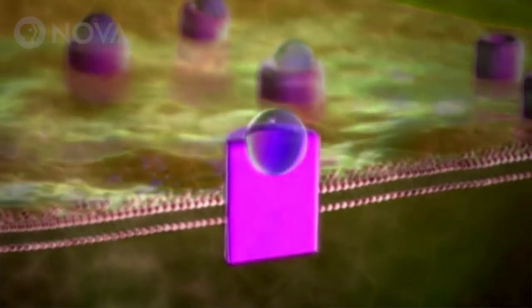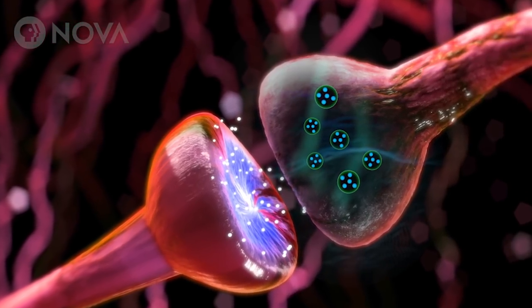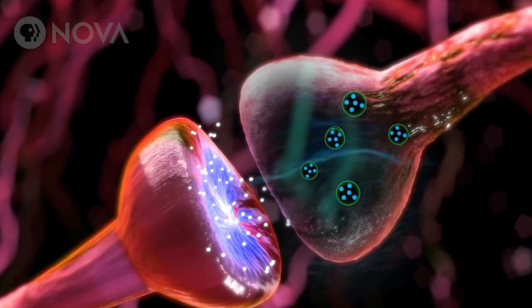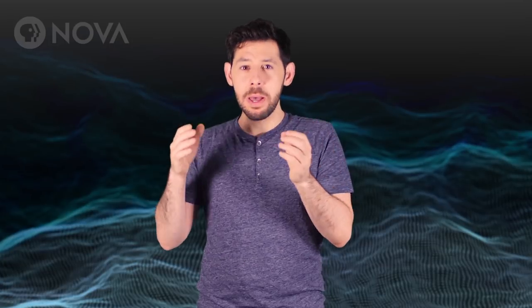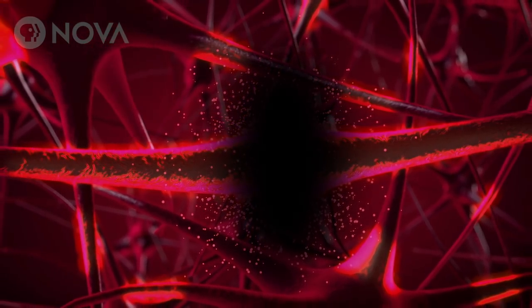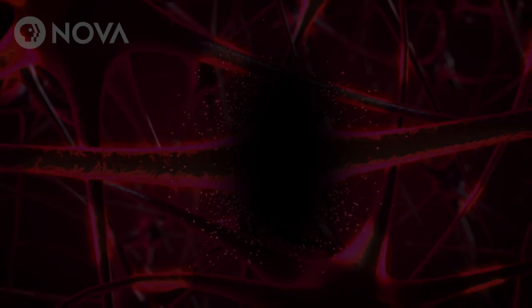Those molecules are called neurotransmitters. The problem is that over time, microscopic bumping can push those neurotransmitters out of place, preventing the signal to go from one neuron to the next. So if you're trying to remember something, but one link in that chain of neurons is missing, you won't be able to get to the rest of the memory.